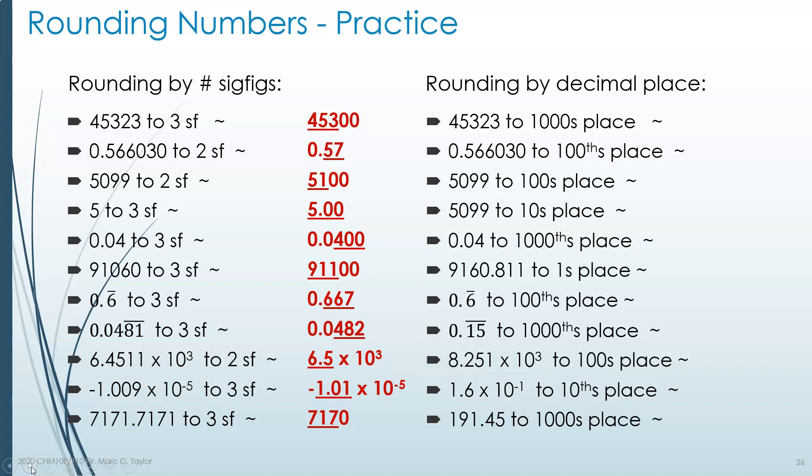Now let's look at rounding by decimal place. Taking the same number 45,323 — previously rounded to three sig figs — we now round to the hundreds place. The hundreds place has a 3. We ask: is the number after it high or low? Well, 2 is low, so the 3 stays the same. The result is filled in with placeholder zeros, giving 45,300.